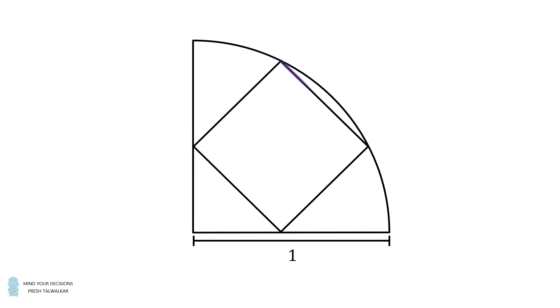To solve this problem, consider the side of the square that's a chord of the quarter circle. Construct the perpendicular bisector of this chord. Since it's a perpendicular bisector of a chord, it will pass through the center of the quarter circle. Then, since we have a square, this will also be the perpendicular bisector of the opposite side of the square.